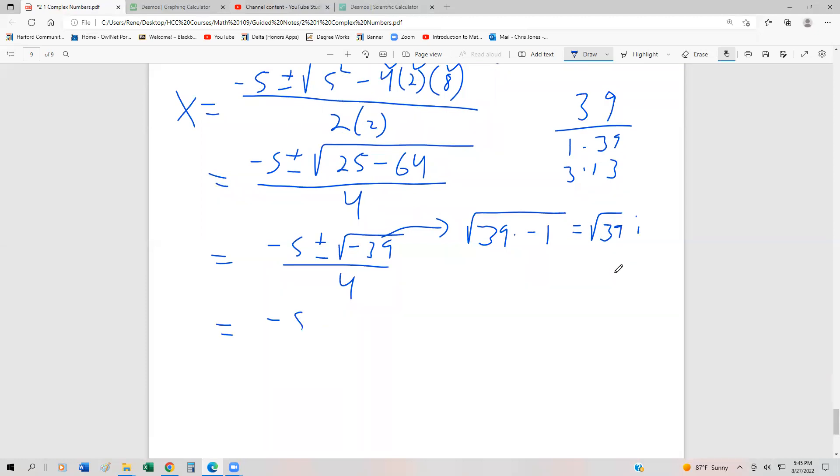It doesn't necessarily always have to simplify, or whatever is under the radical. It doesn't always have to simplify completely. We could still have a square root or an irrational number times i. So this would be negative 5 plus or minus the square root of 39i divided by 4. And then we could split this up into two separate, like a real part and then also a complex part. So negative 5 fourths is the real part, and then we have plus minus 39 over 4i would be the complex part.